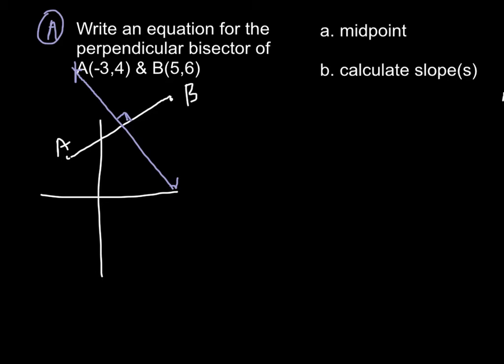So we're going to first find the midpoint, and then we're going to calculate the slopes. We're going to first calculate the slope of our line from A to B, and then find the perpendicular one for our perpendicular bisector.